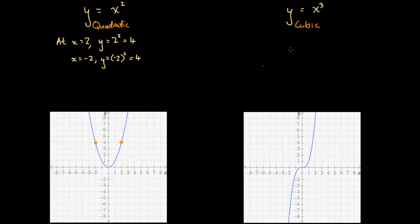We've discovered that the reason the quadratic graph has no negative y values is the property of negative numbers: when you multiply a negative number by a negative number you always get a positive number. Consequently, whether we substitute any positive or any negative x value into this function, we always get a positive y value, so all y coordinates on this graph are positive.